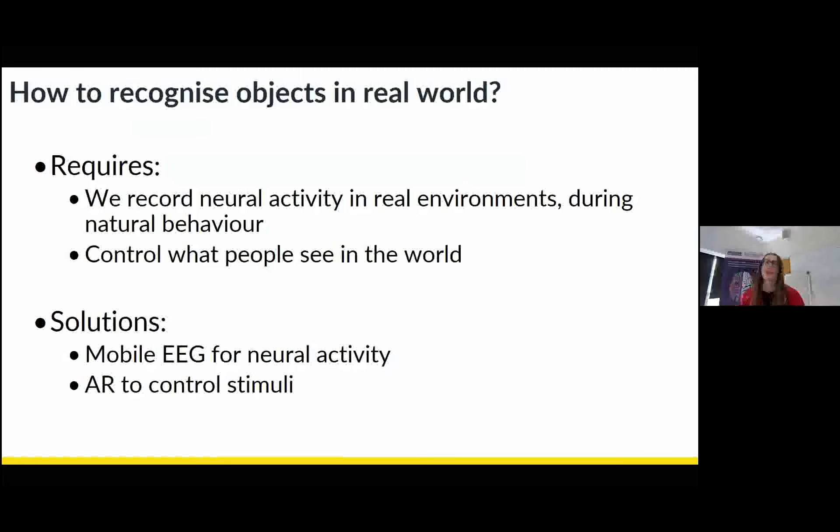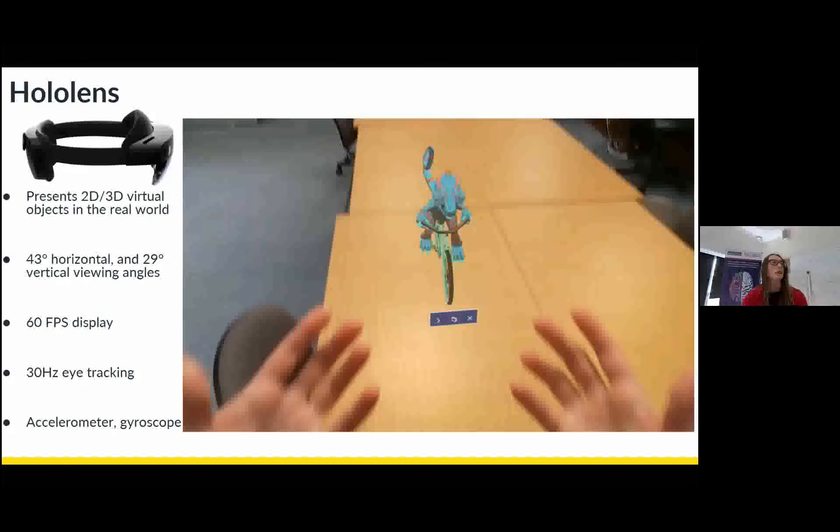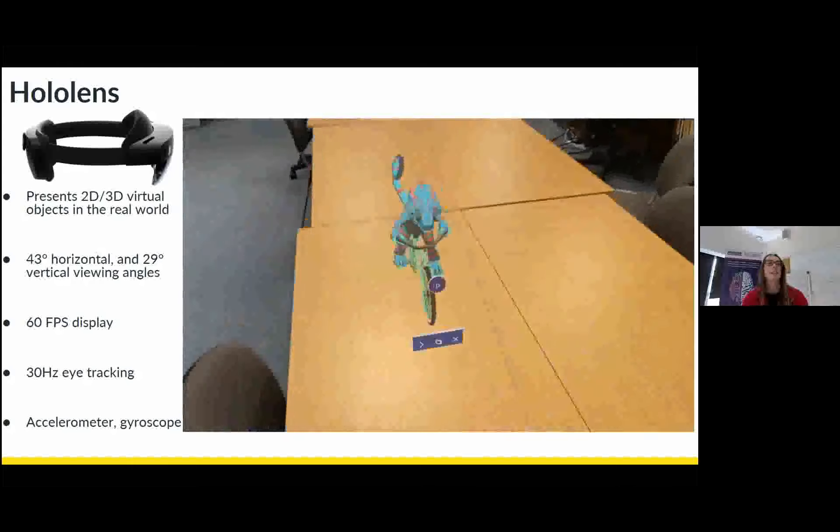So I'll just take you through our augmented reality and mobile EEG setups. So for augmented reality, we use the HoloLens, which looks like this thing here. And for those that don't know, it presents two dimensional or three dimensional objects into the real world, like this chameleon here. And they can even be animated.